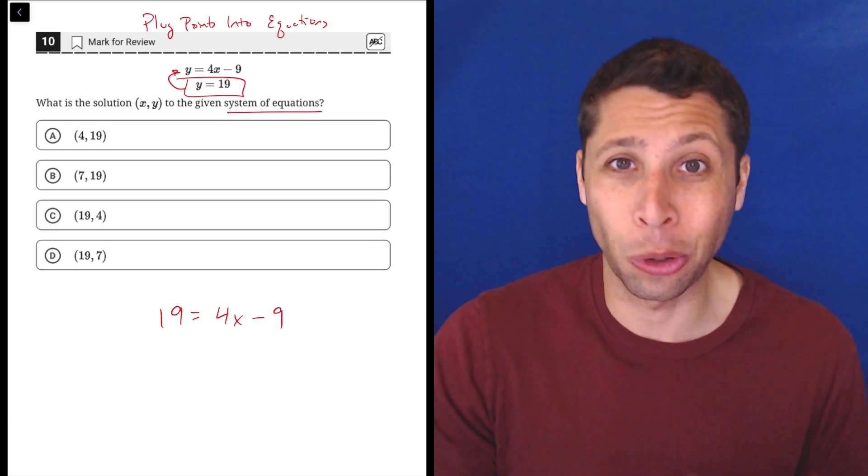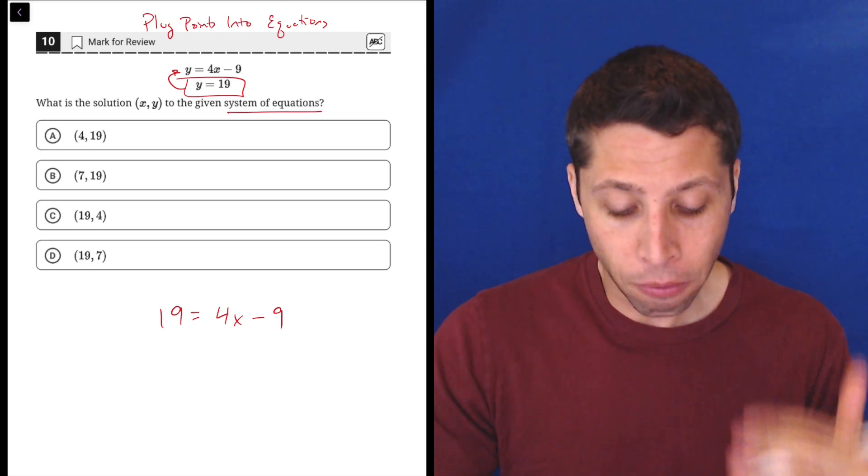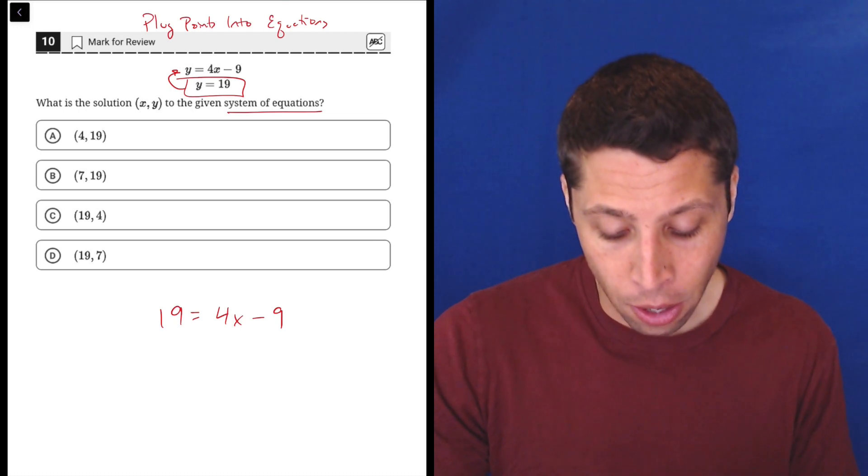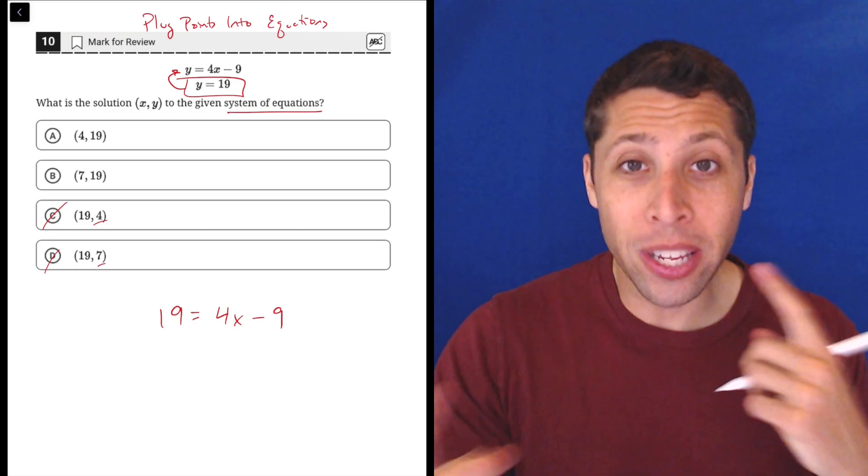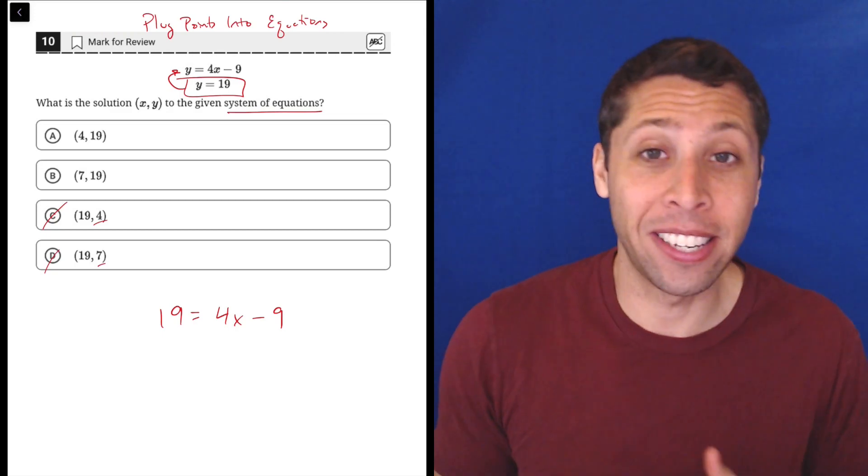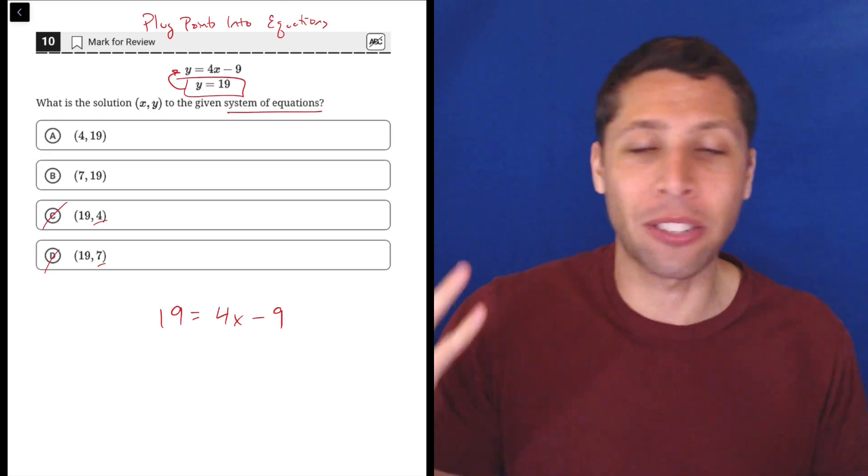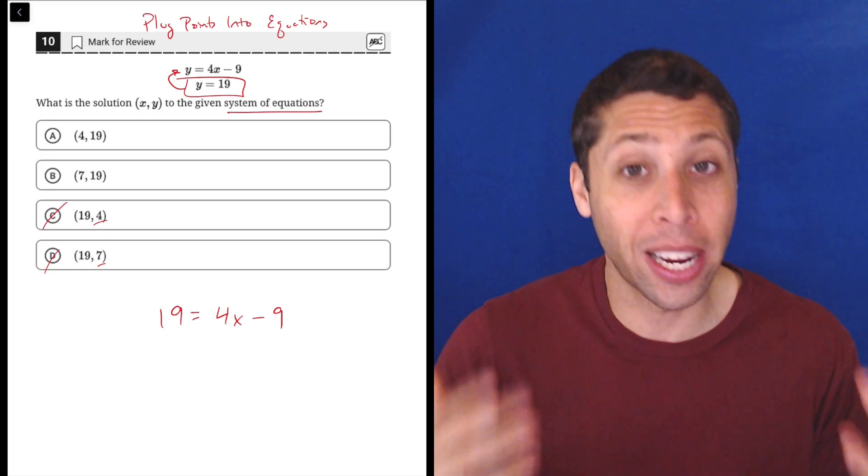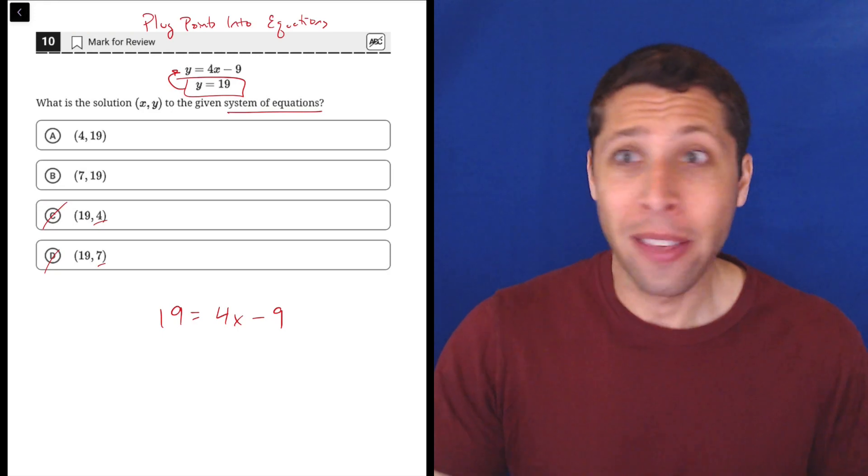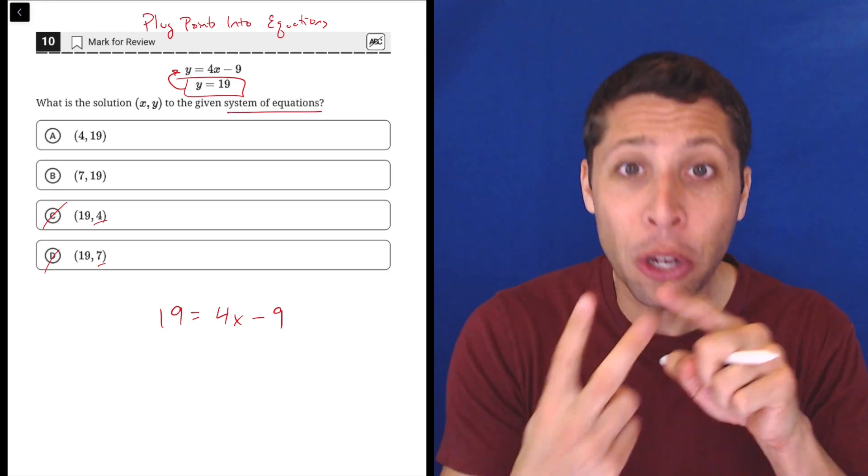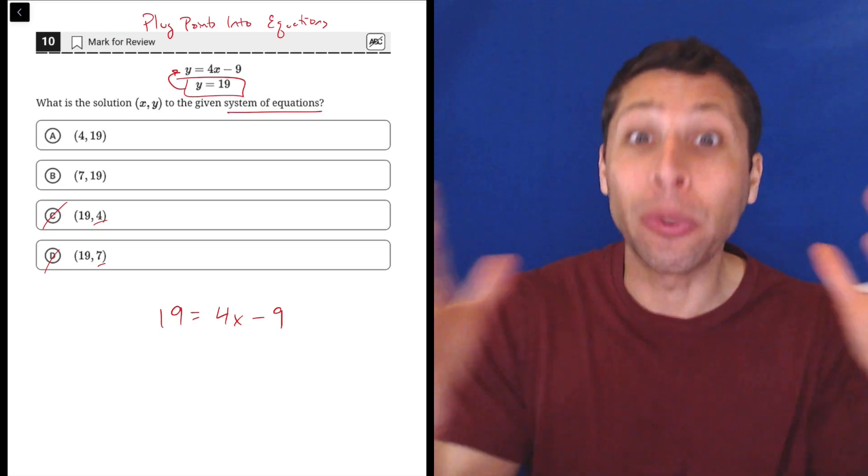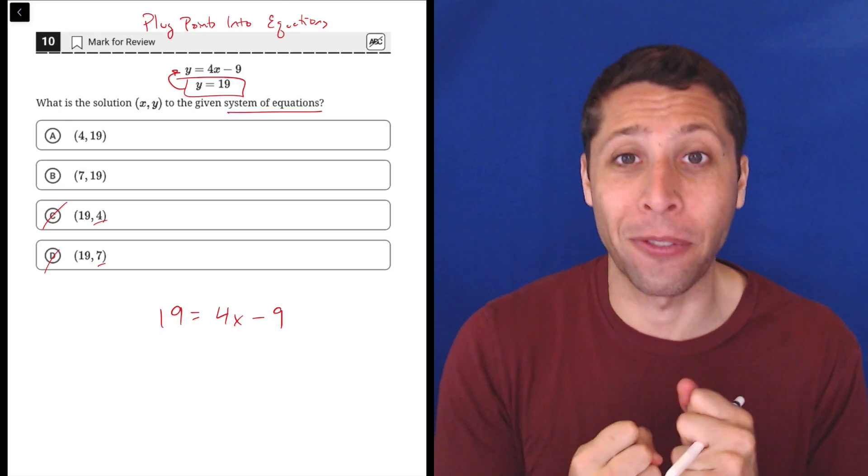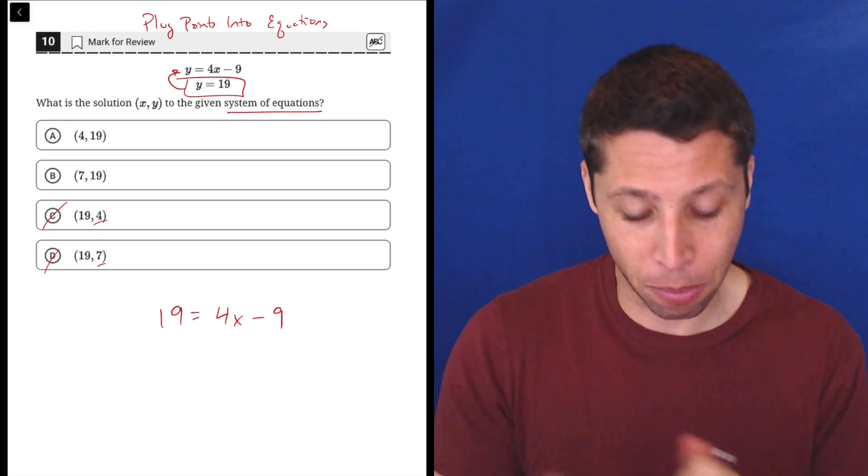We can also use the answer choices to great advantage here. First, when they tell us y is 19, we know instantly that C and D are wrong because they've confused the x and y coordinates. Notice, that's something that the SAT is testing. If you frequently mess up x and y and which one comes first and which one comes second, that's a problem. That's as fundamental as knowing that the number two comes after the number one. You have to know how to read a graph and how to get coordinates off the graph. X and y are an important part of this.